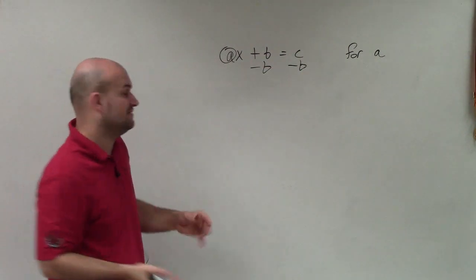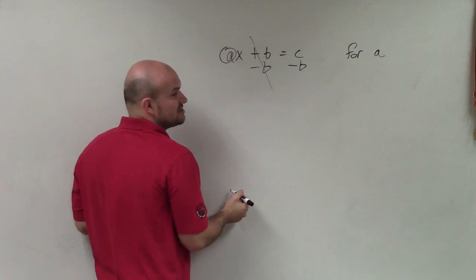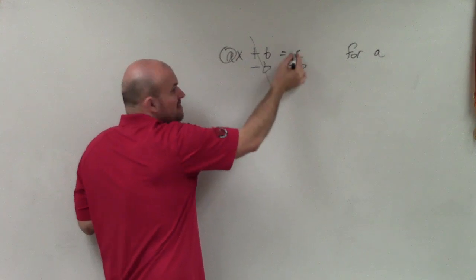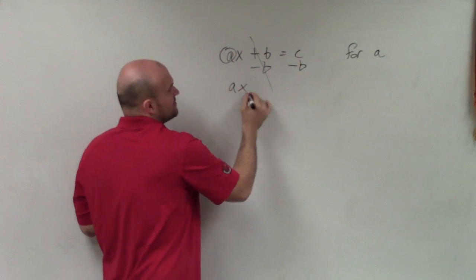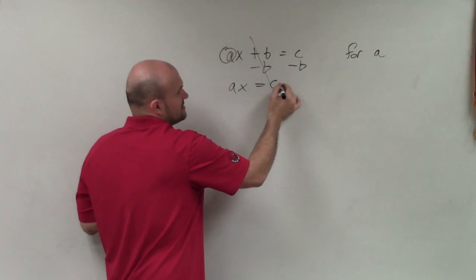And I'll use my subtraction property of equality. That's going to now subtract to 0, and then these, c minus b, are not like terms. So I'm going to have to write ax is equal to c minus b.